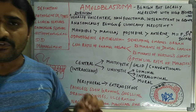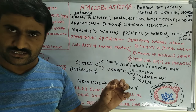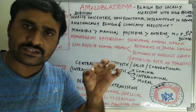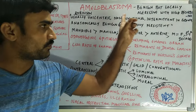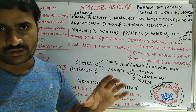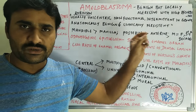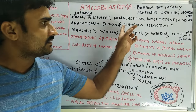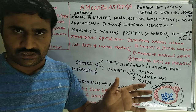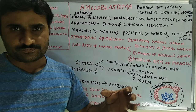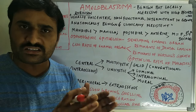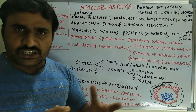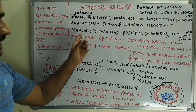Robinson defined amyloblastoma as usually unicentric — meaning there is only a single center of tumor origin — and non-functional, meaning there is no specific function. It is intermittent in growth and anatomically benign and clinically persistent, meaning the tumor grows continuously without any spontaneous cessation.